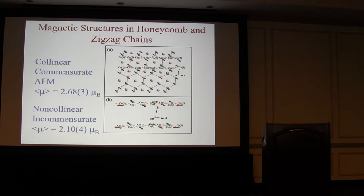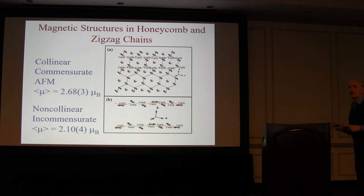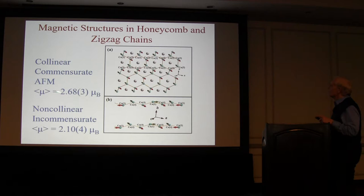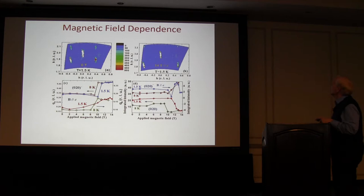The bottom line is that there are really two types of magnetic order. On the zigzag chains, that's where the incommensurate magnetic order develops—it's a non-collinear magnetic structure, incommensurate in all three directions. Then there's the commensurate part: in principle there are three different cobalt crystallographic sites, but they all appear to have very similar moments, so we set all three moments equal, and it's just a simple collinear antiferromagnetic structure. The question is how this relates to the ferroelectricity and how these peaks behave as a function of electric and magnetic fields.